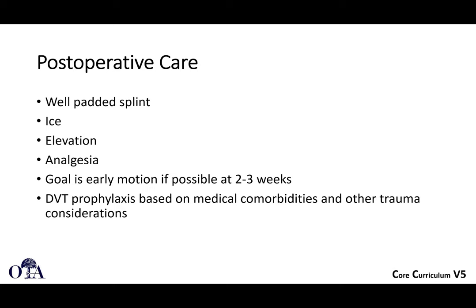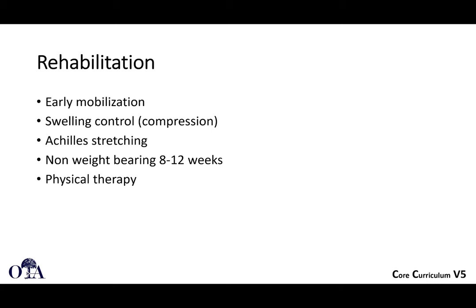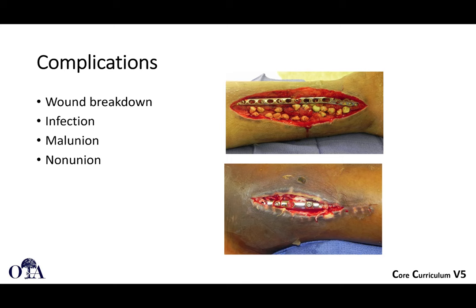Post-operative care includes a well-padded splint, ice, elevation, and analgesia, with early motion targeted at two to three weeks — though you're often not pushing early motion immediately. You're generally more concerned about the soft tissue envelope here than with a hip or even a knee, favoring soft tissue and wound healing before starting motion. DVT prophylaxis should be provided based on comorbidities and other trauma considerations. Apply AO principles: get patients mobilized for swelling control and contracture prevention, with most patients non-weight bearing for eight to twelve weeks, as with most lower extremity articular fractures.